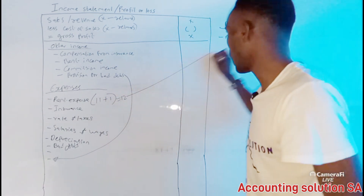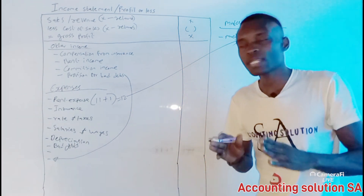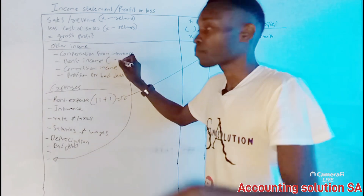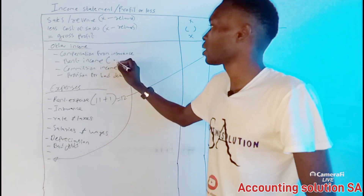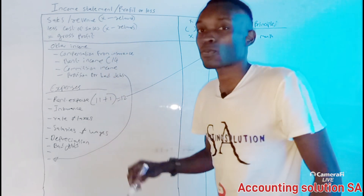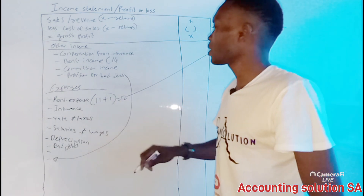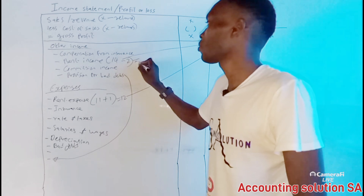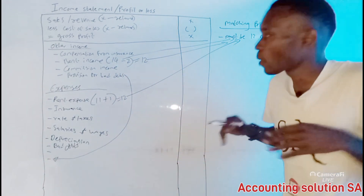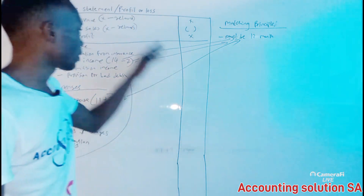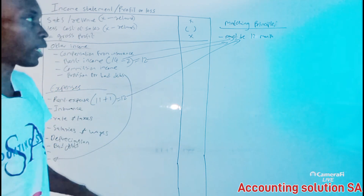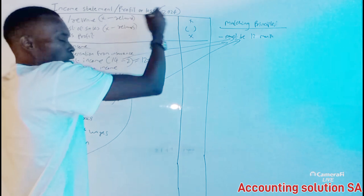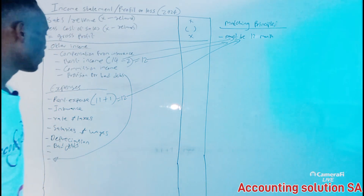Similarly, if rent income has been received for 14 months — 12 months of the current year plus 2 months for the following year — you have to subtract those 2 extra months: 14 minus 2 gives you 12, which aligns with the principle. Once you know and follow this matching principle, income statement becomes very simple and straightforward. Make sure everything you record is for the correct year only.